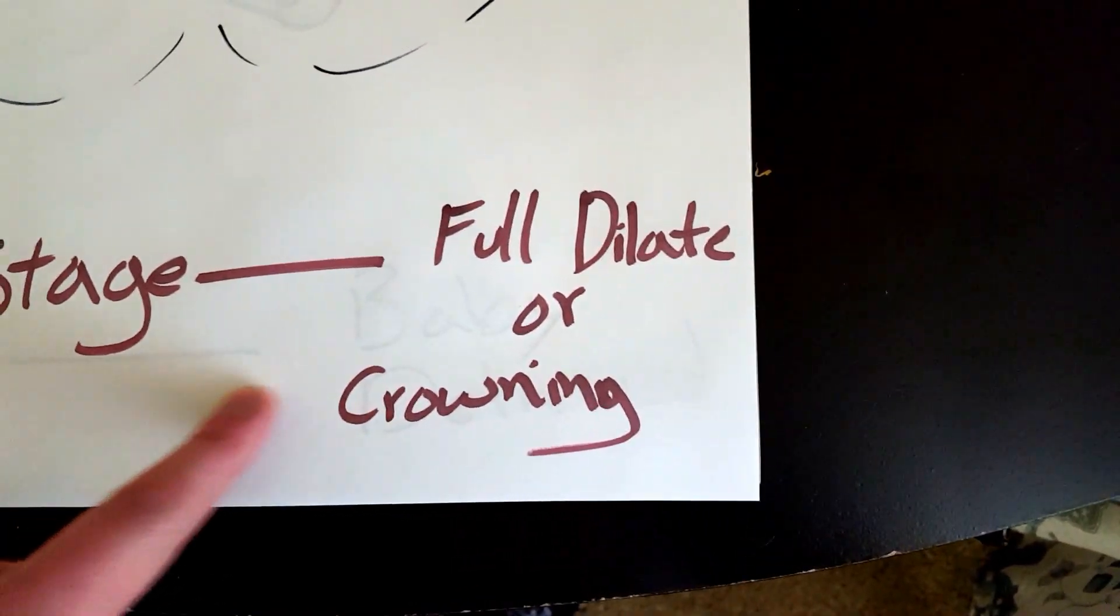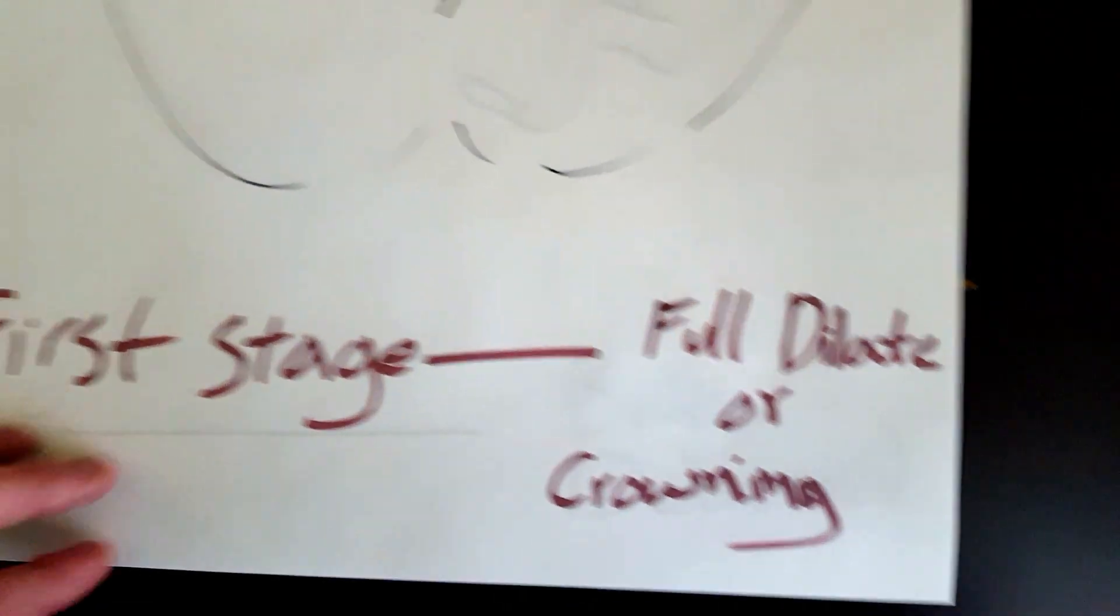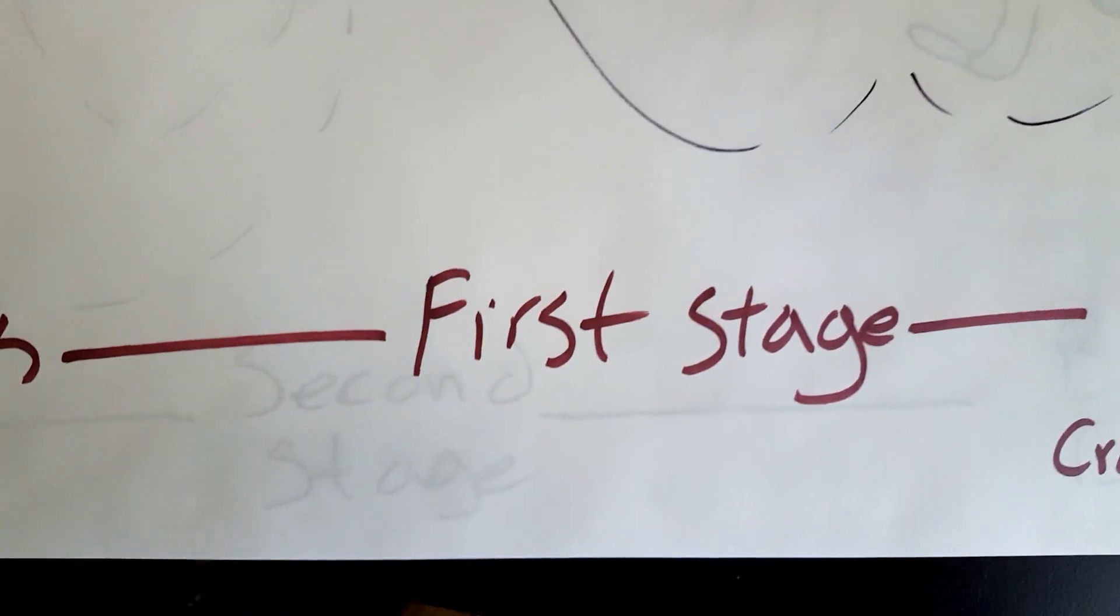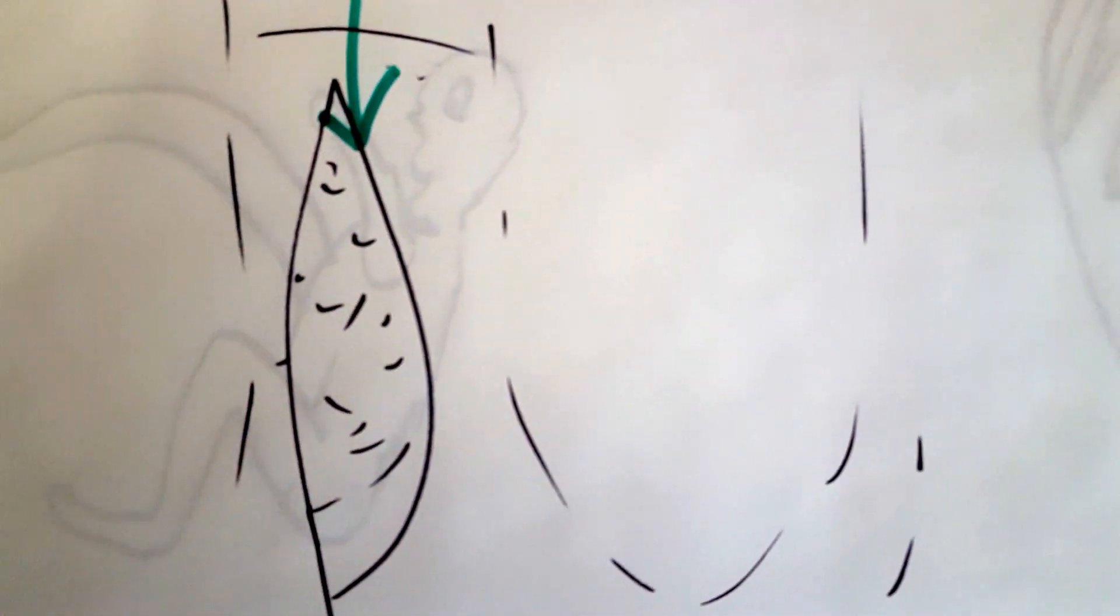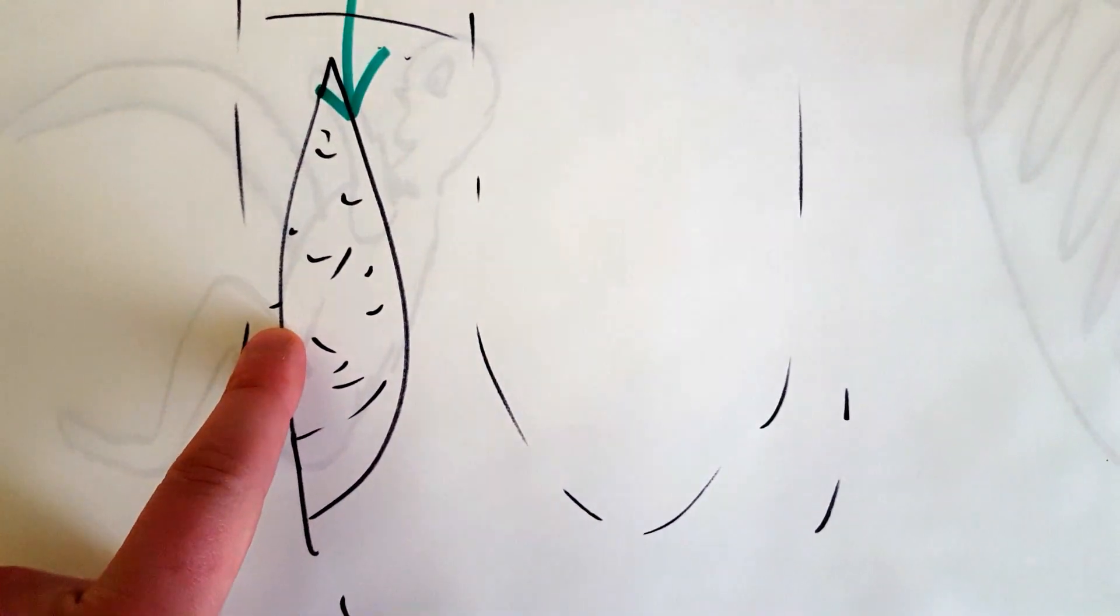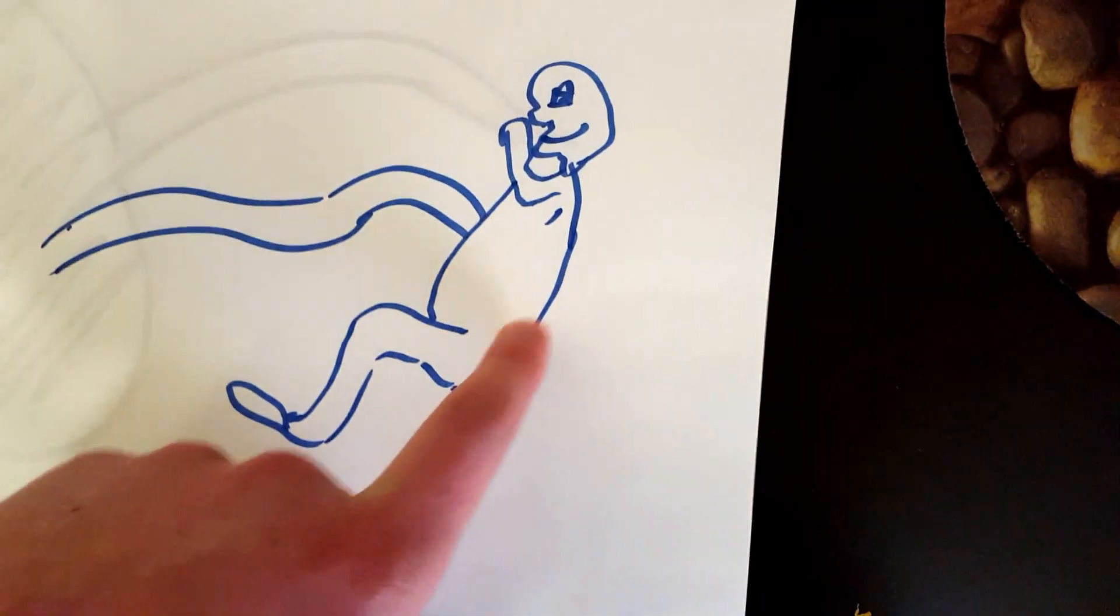Second stage: stage two picks up where stage one left off. So from crowning or full dilation to the actual delivery of the baby. That's a baby, by the way—not the best drawer.